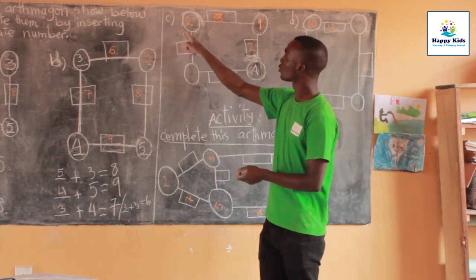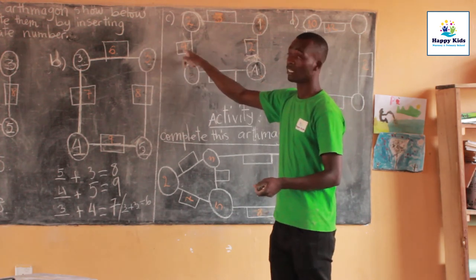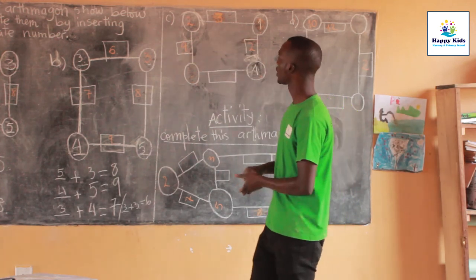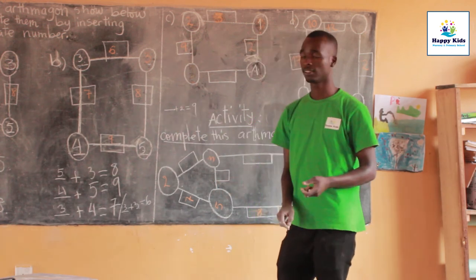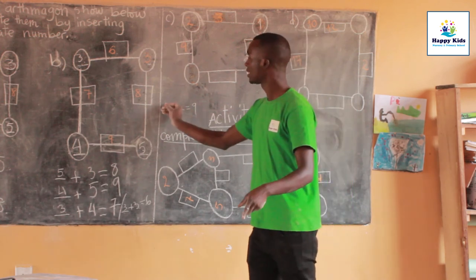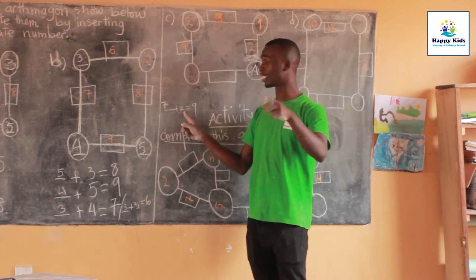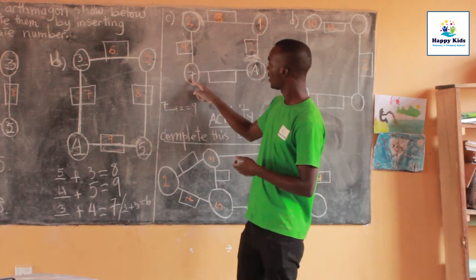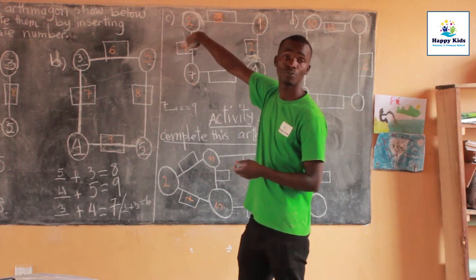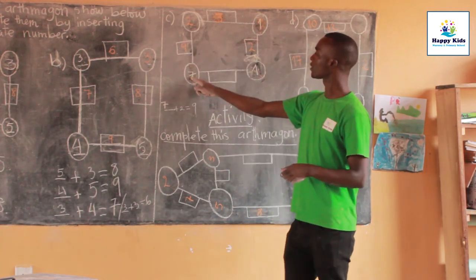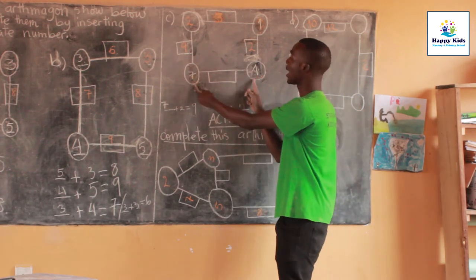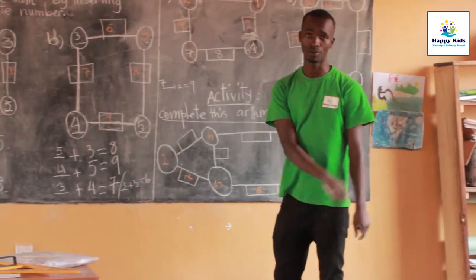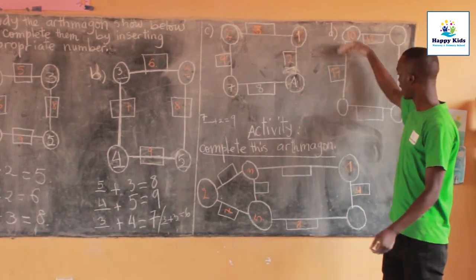Which number can we add to this two to get nine? We have two here and the sum of nine at the edge. The number is seven — add seven to two and you get nine. So this number here is seven. When we put seven here and add it to two, you will get the sum of nine. Here we have seven and here we have one, giving the sum of eight at the edge. To complete this Alphimagon — I hope you understand.